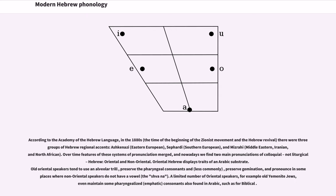According to the Academy of the Hebrew Language, in the 1880s, the time of the beginning of the Zionist movement and the Hebrew revival, there were three groups of Hebrew regional accents: